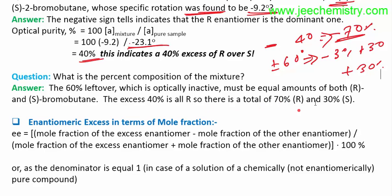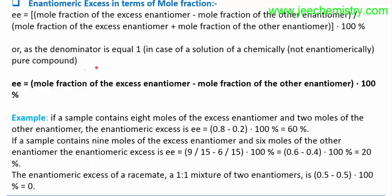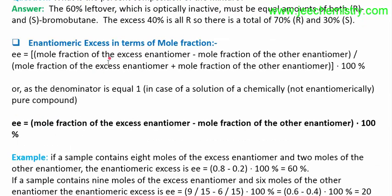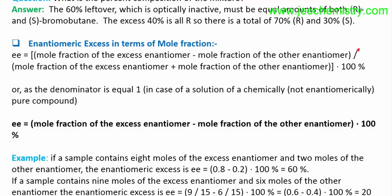Enantiomeric excess can also be calculated using mole fractions. The formula is: EE = (mole fraction of excess enantiomer − mole fraction of other enantiomer) × 100. Since the sum of mole fractions equals 1, this simplifies to the same percentage formula used previously.